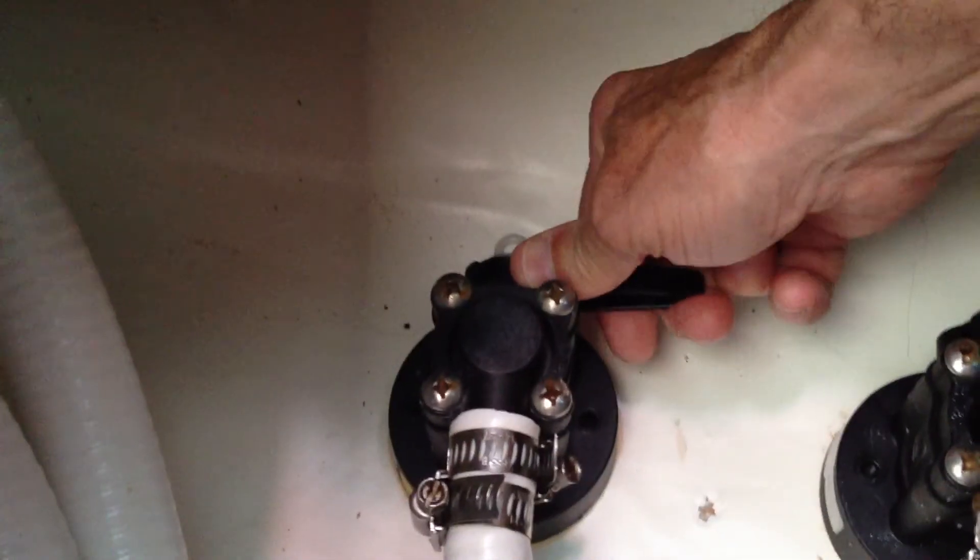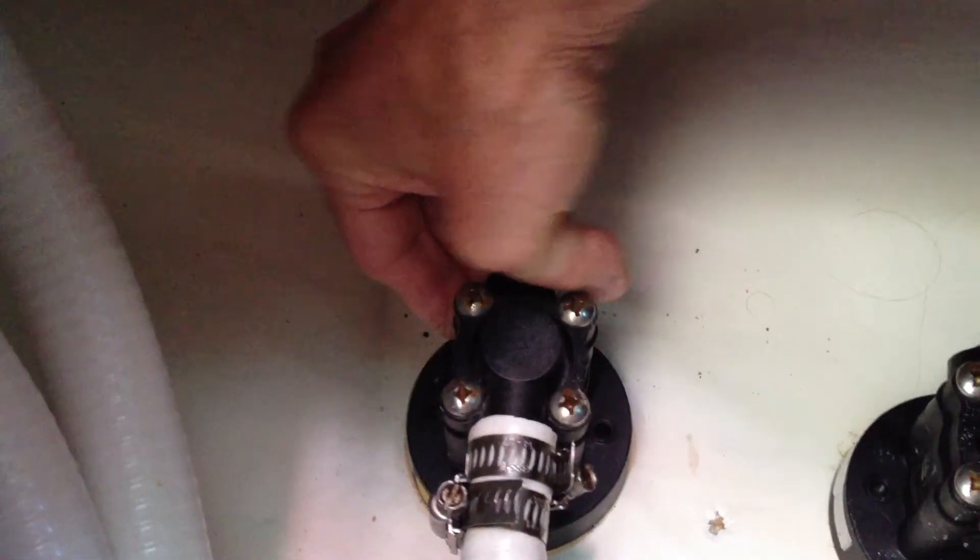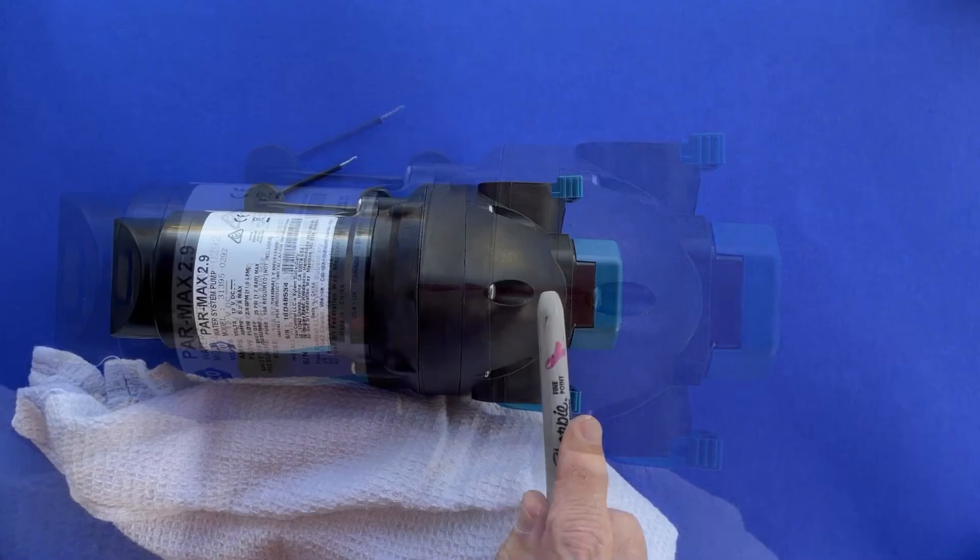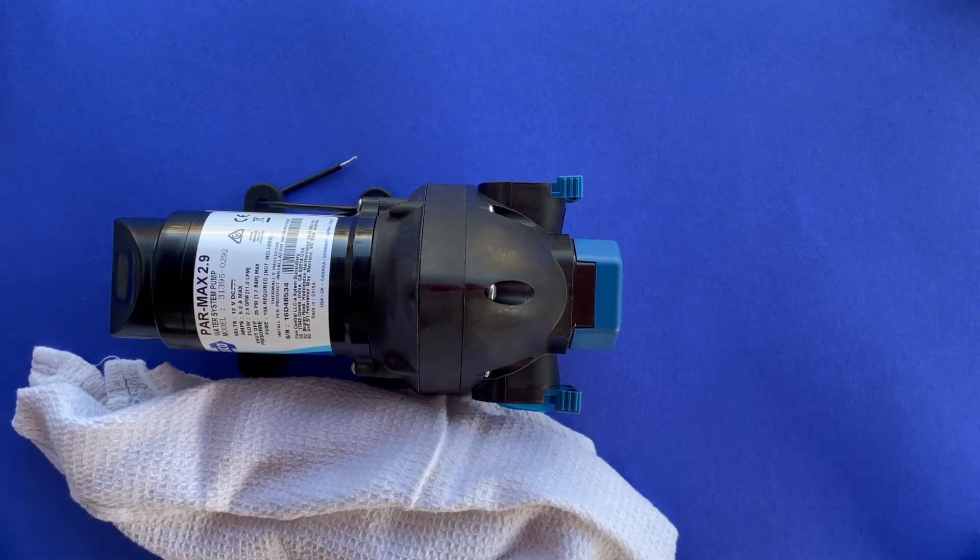After closing the seacock and disconnecting all plumbing and electrical connections, place the pump on a convenient work surface. Mark a reference line across the pump's upper housing and body. This will aid in reassembly.